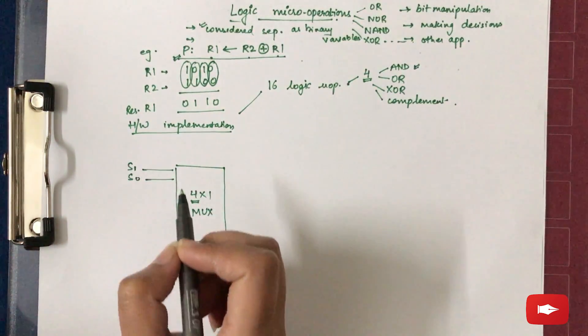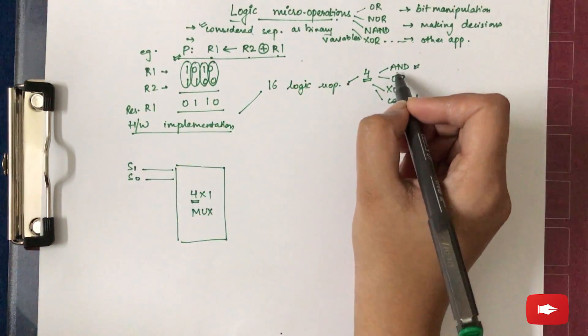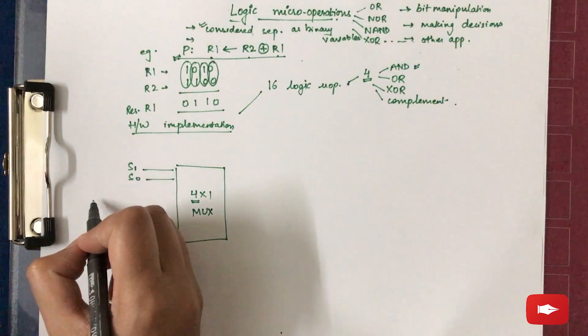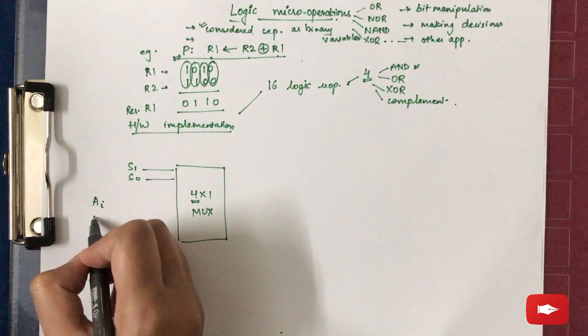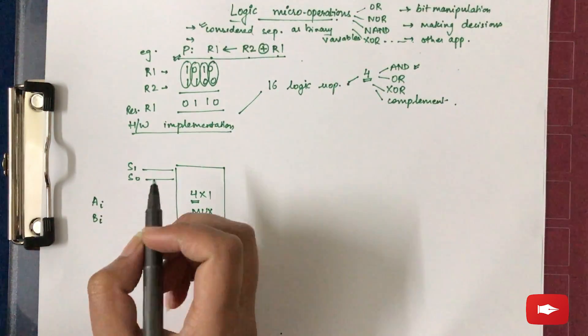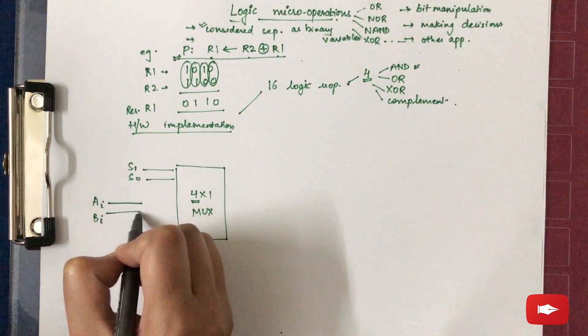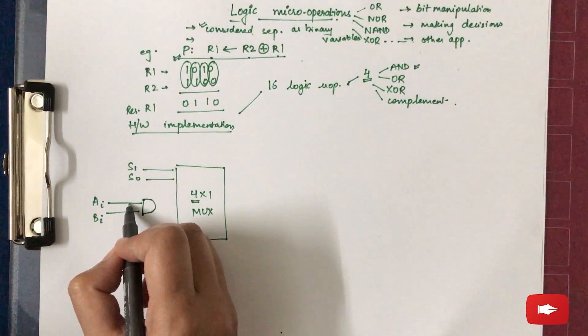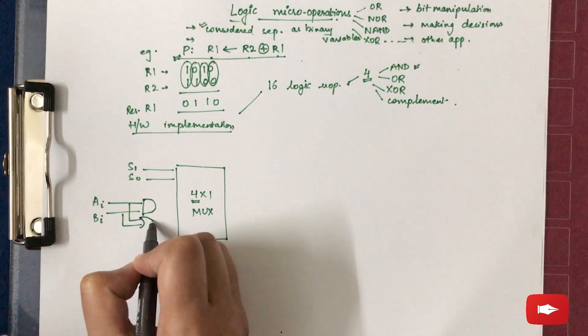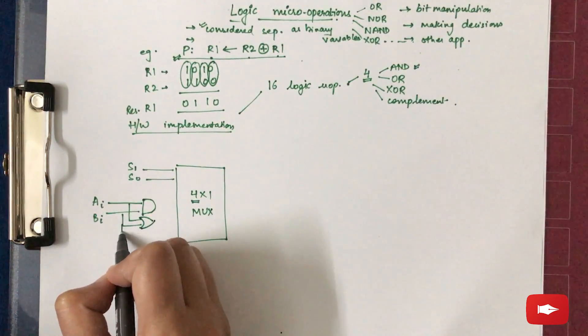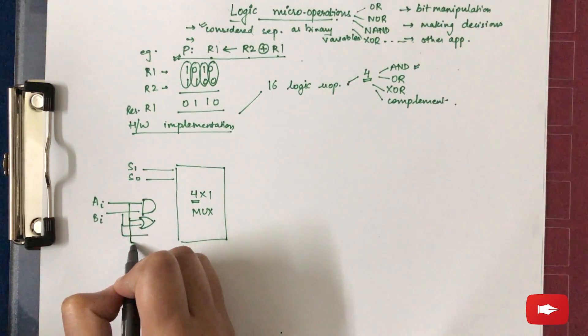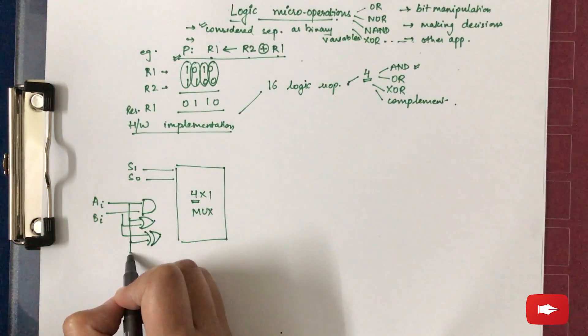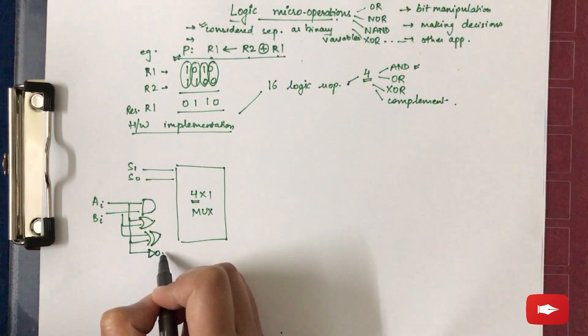Again, we have 2 operands A_I and B_I. First, micro operations that will be performed between the 2 can be AND. Second can be OR. Next can be EXOR. And the last can be the complement.